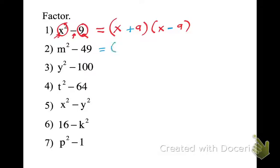Let's try one more. m squared minus 49. The square root of m squared is m, and the square root of 49 is 7. One's a plus, and one's a minus. So what we have are two factors. Factors are quantities that divide evenly. Pause the recording and try 3 through 7.